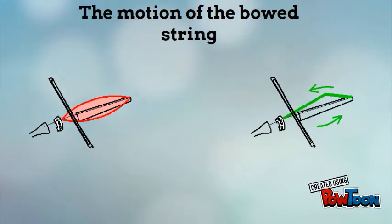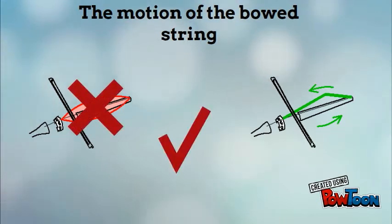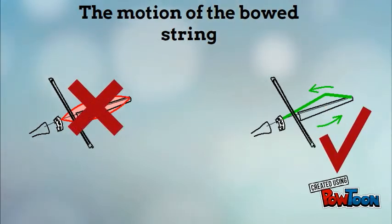Helmholtz discovered that the string actually moves in a V shape, as you can see on the right. The only reason we see a parabola shape is because the sharp corner moves along a curve, camouflaging itself.